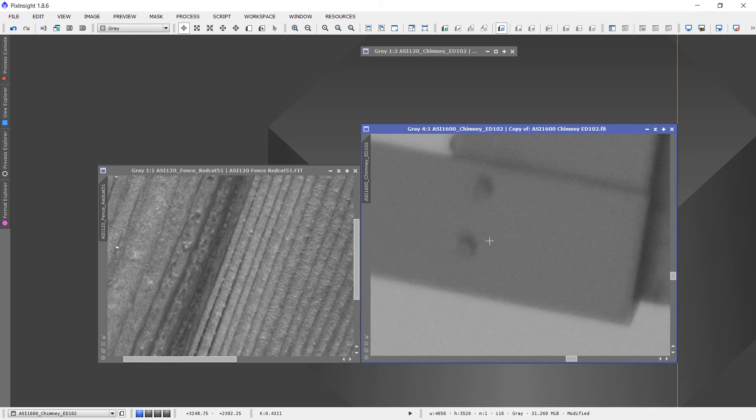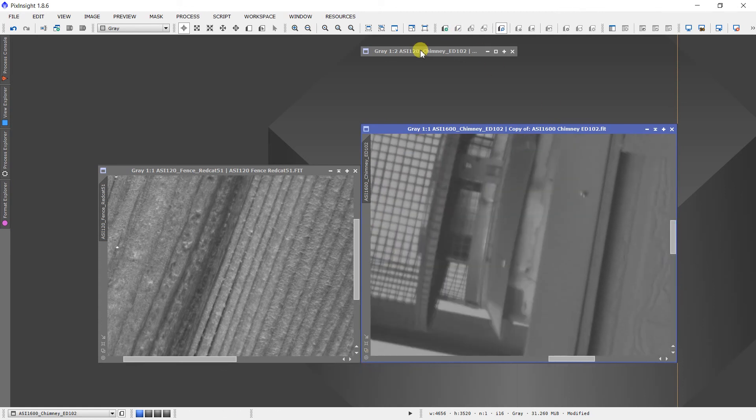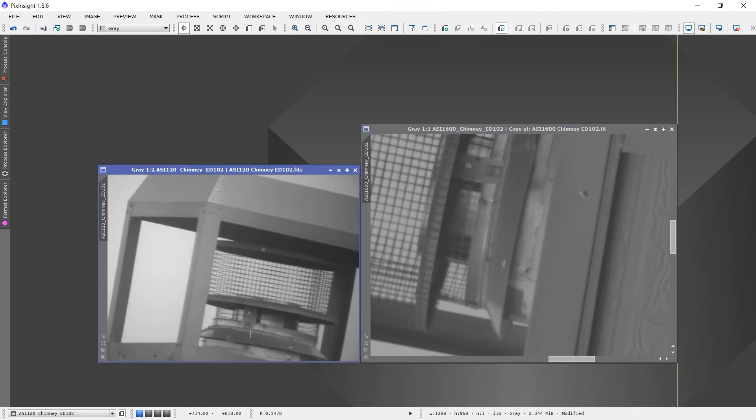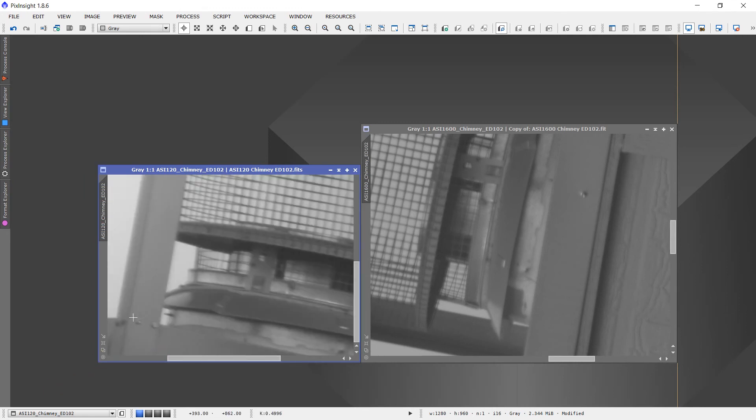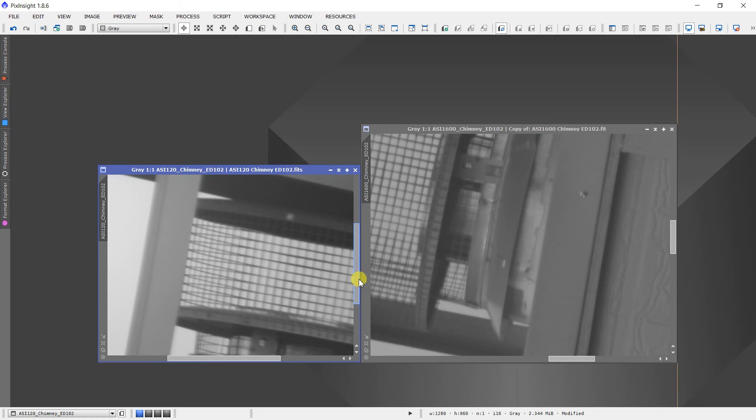And then the corresponding image from the guide camera is similarly in focus. Once again the screws come through fairly clearly. Let's put this way, it's as equally out of focus as the imaging camera was which in a weird sort of way confirms that the guide camera is focused as well as the imaging camera so I think we're in pretty good shape.